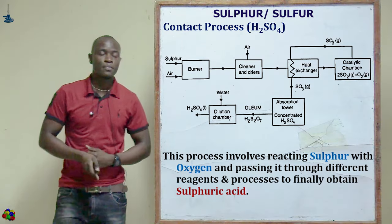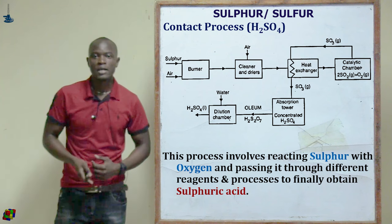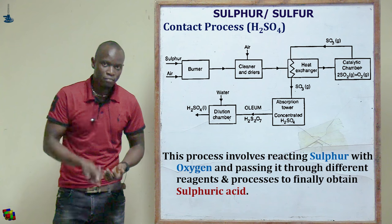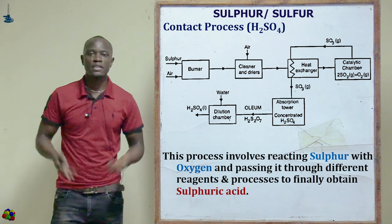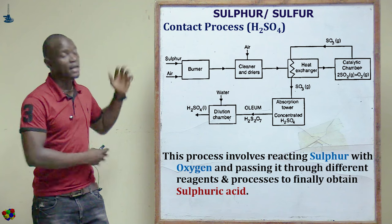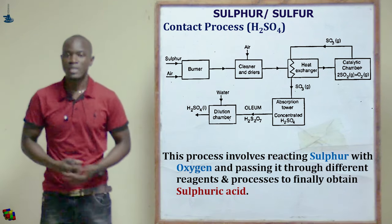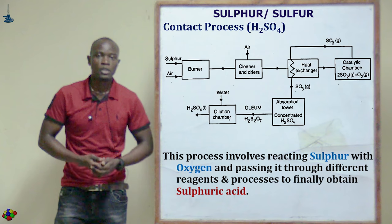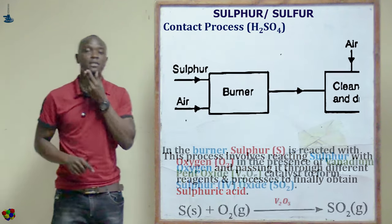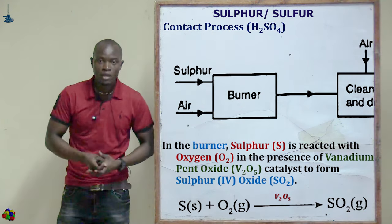This is the flowchart diagram of the contact process, whereby we begin with sulfur reacting with oxygen in the burner, then we have the purifier or dryer, then the heat exchanger. This diagram summarizes the contact process up to where we obtain the oleum, and then the dilution chamber to obtain concentrated sulfuric acid.